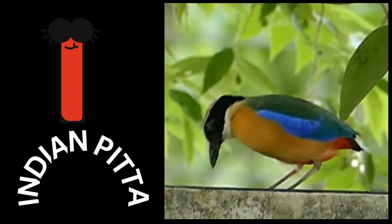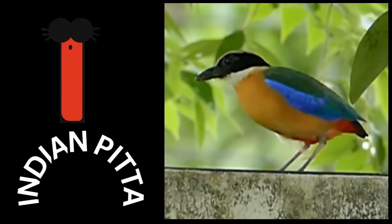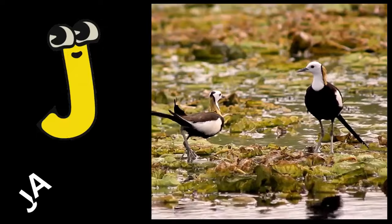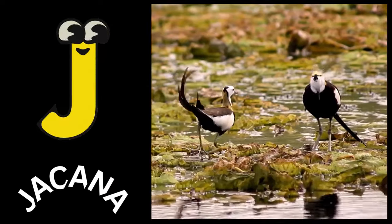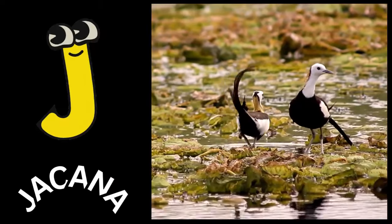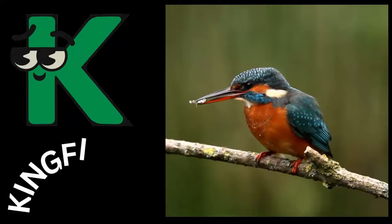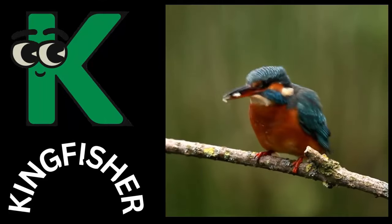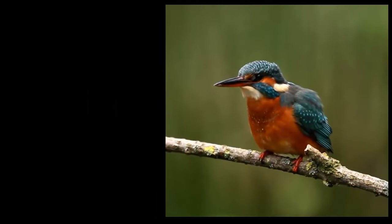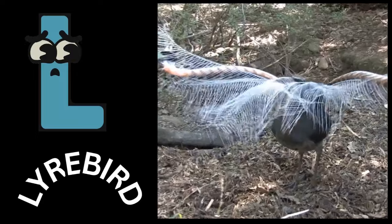I is for Indian Pitta. J is for Jacana. K is for Kingfisher. L is for Lyrebird.